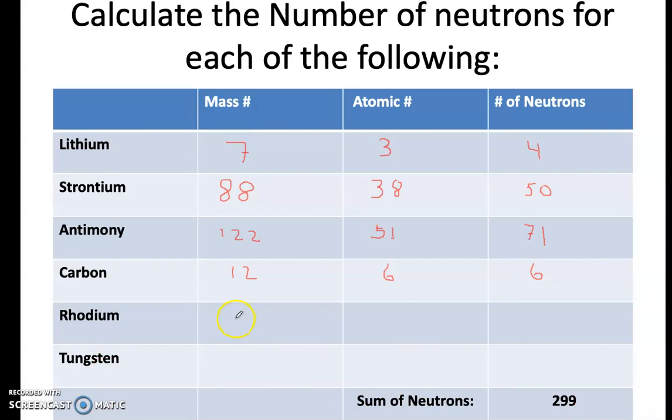All right, so let's check rhodium. Mass number is 103. Atomic number 45. You subtract those two, and you should get 52. Over here, tungsten. 184 for the mass number. 74 for the atomic number. Subtract those two, and you should get 110.